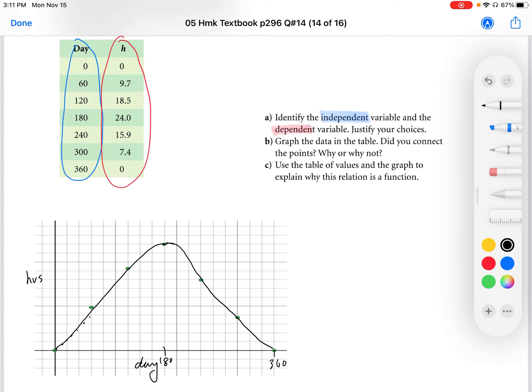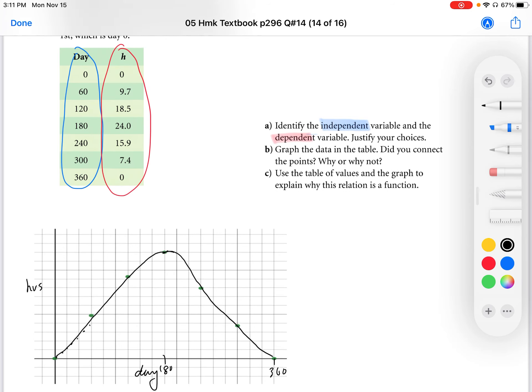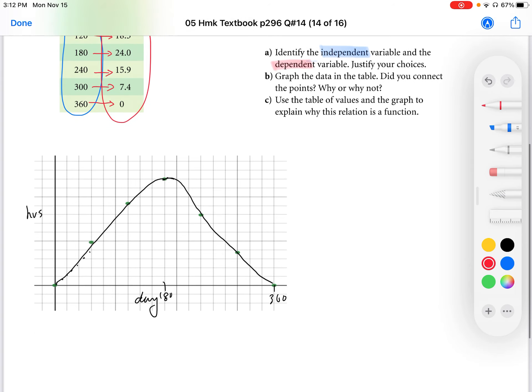Use the table of values and the graph to explain why this relation is a function. Well, it is a function because there is this one-to-one relationship of days. Each day only has one hour associated with it, so it passes the function test that way.